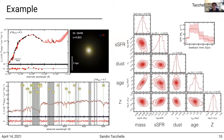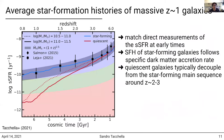We can look at the average star formation histories for massive galaxies around redshift 1. The blue line shows star-forming galaxies, and you can see that we are able to reproduce direct measurements of the star formation rate at the stellar mass main sequence also at earlier cosmic times. The blue line tracks the specific star formation rate measurements from direct measurements at early cosmic times, showing our results are not unreasonable. Going to early cosmic times, we can see that star formation histories of star-forming and quiescent galaxies are similar, and then the quiescent galaxies decouple from the star-forming main sequence around redshift 2 to 3.